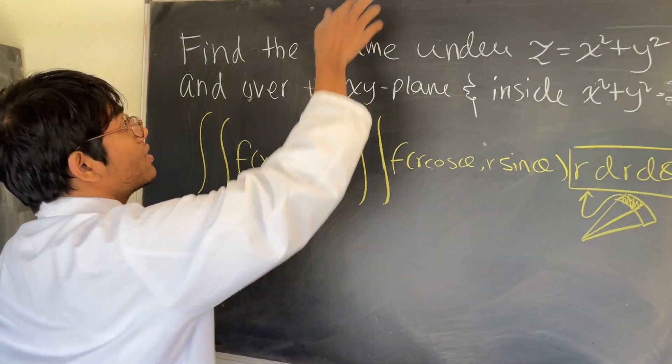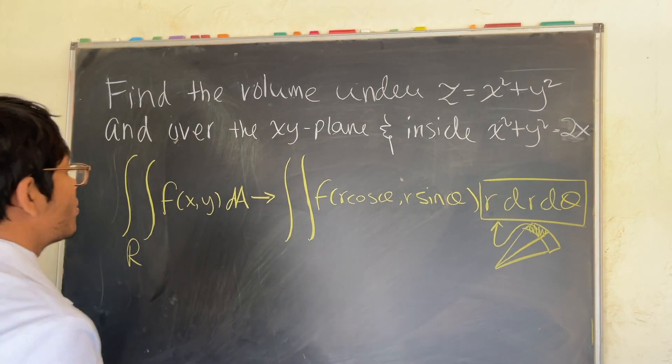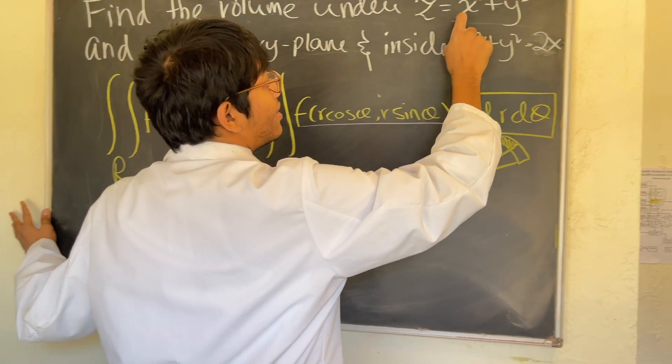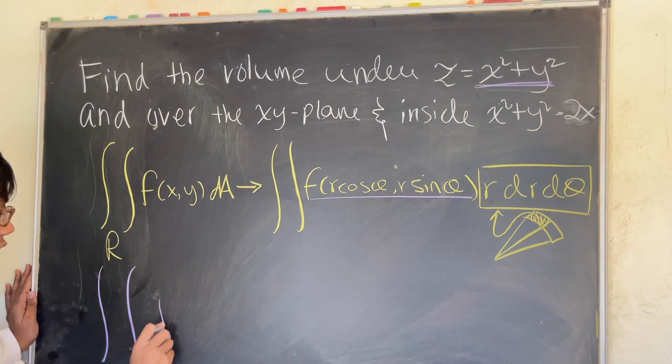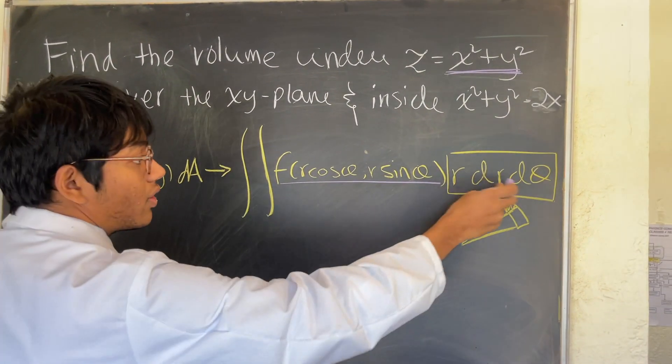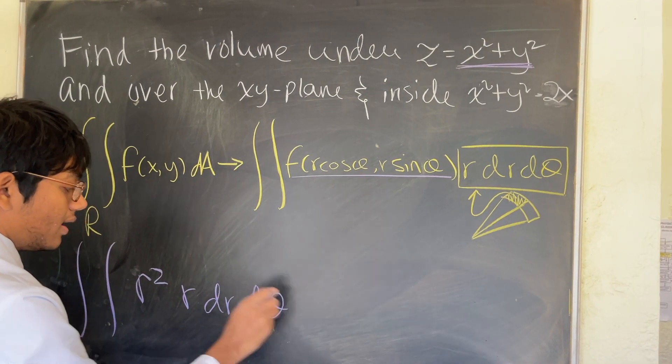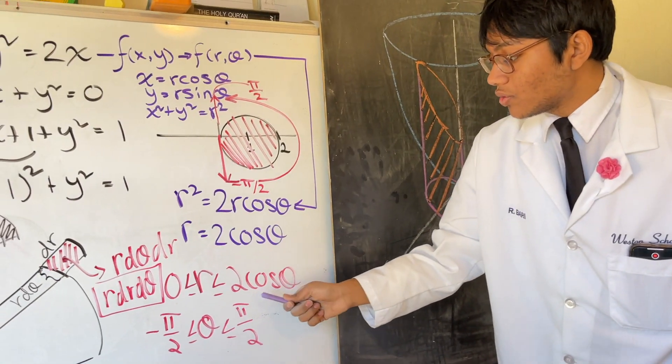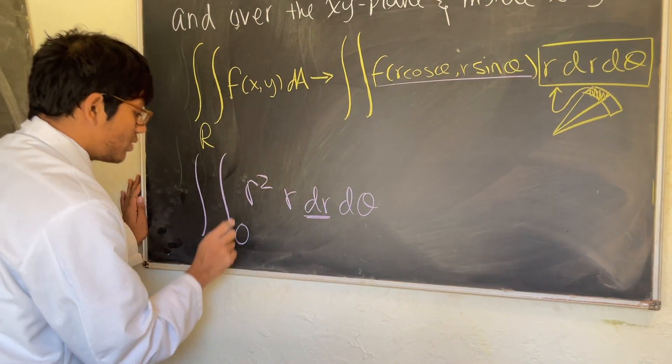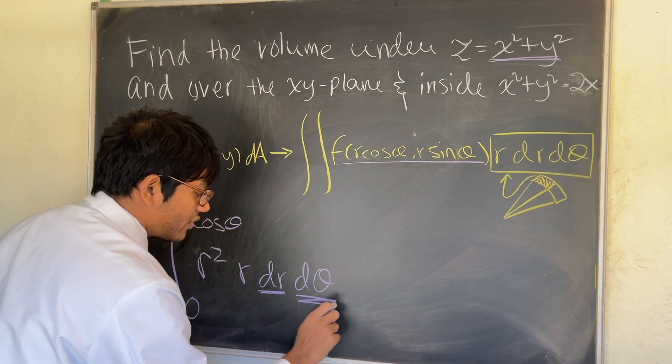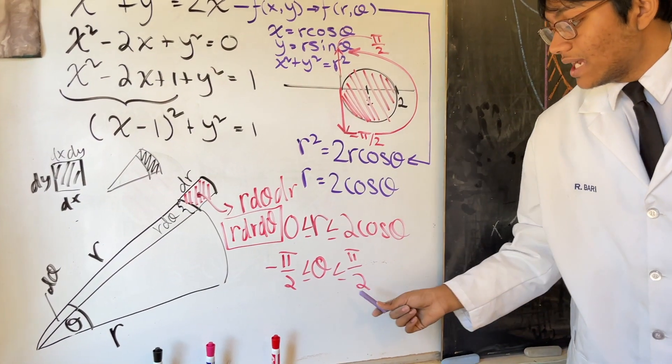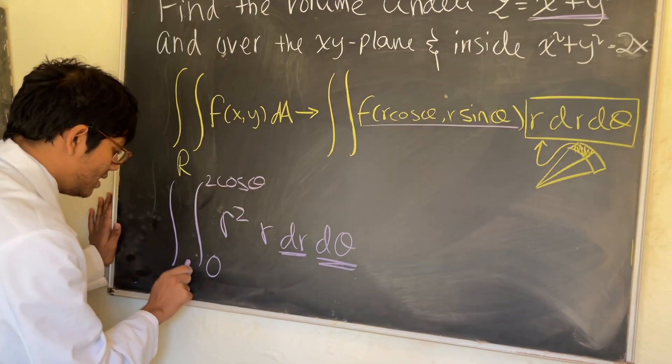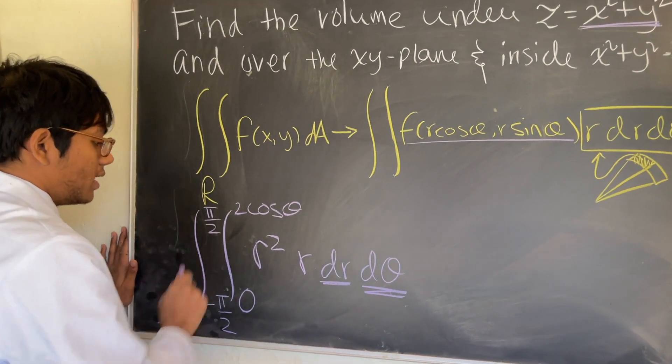So now we're going to go ahead and evaluate this. We'll have double integral of f(r cosine theta, r sine theta). What does that become? Well, x squared plus y squared becomes r squared. And what is the rest of it? It's r dr d theta. What are the limits of integration for r? Let's check our whiteboard. The limits of integration for r are between 0 and 2 cosine theta. And the limits of integration for theta are between minus pi over 2 and pi over 2. Be careful, don't put from 0 to 2 pi. It's going to be from minus pi over 2 to pi over 2.